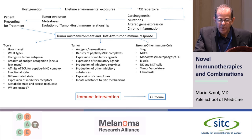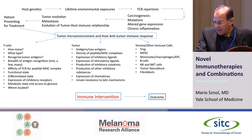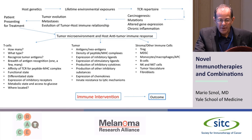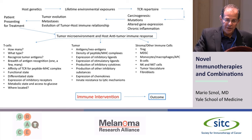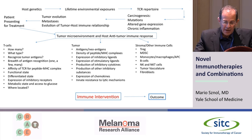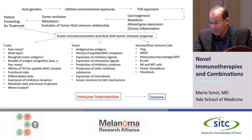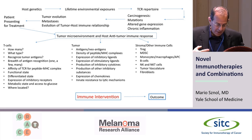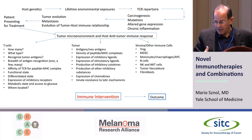At some point in someone's lifetime, they develop a cancer. That cancer is different in every individual because it has different mutations and different types of gene expression. It develops often in the context of chronic inflammation — the cancer is sometimes aided in its development by an inflammatory response. During this time, you get this host-tumor relationship, where your body develops an immune response against the cancer over time.